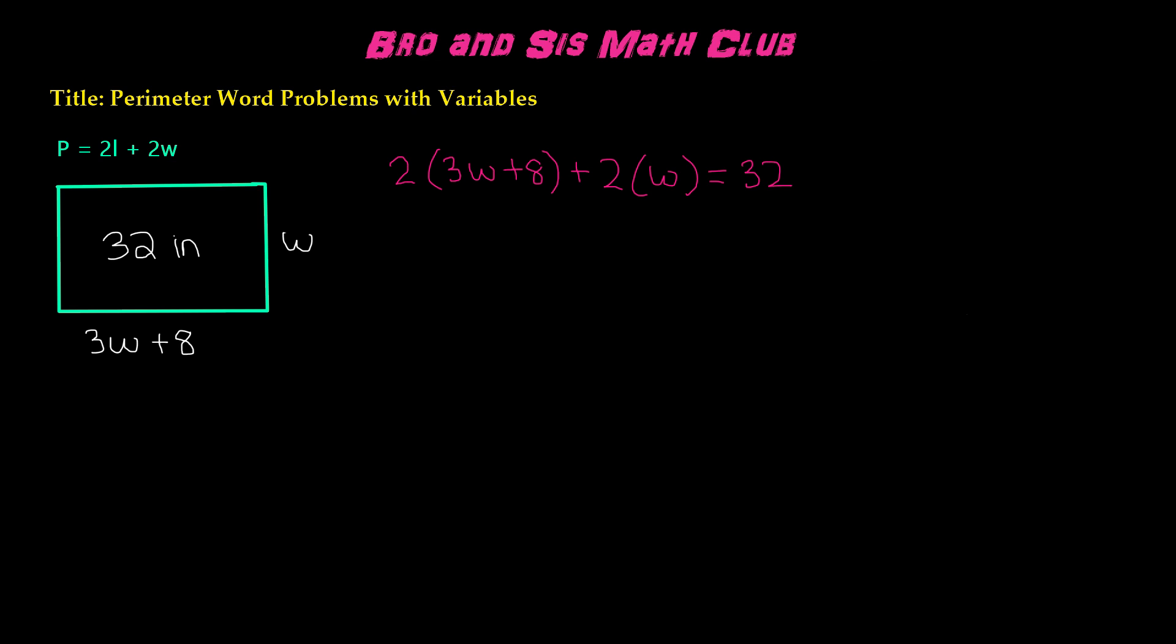Now let's go ahead and multiply. Since these are in the parentheses, we're going to distribute the 2 to 3w and 2 to positive 8, and we'll get 6w plus 16, and then 2 times the w gives us plus 2w, equals 32.